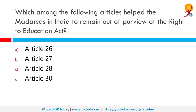Which among the following articles have allowed Madrasas in India to remain out of the purview of the Right to Education? The correct answer is Article 30, which is called a charter of education rights. Article 30 mandates that all minorities whether based on religion or language shall have the right to establish and administer educational institutions of their choice, providing an absolute right to linguistic and religious institutions to also claim grant-in-aid without any discrimination.